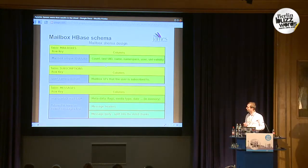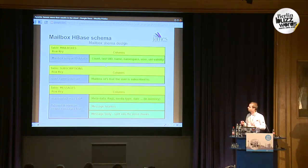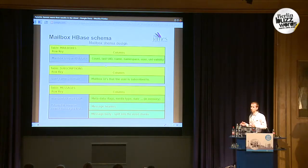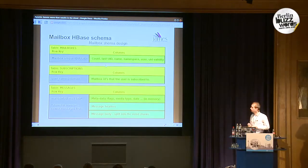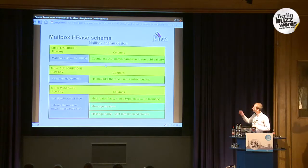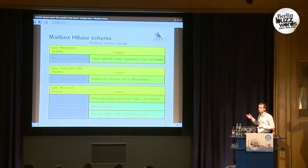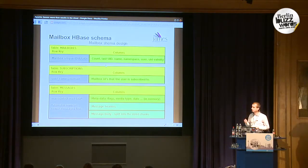The mailboxes table and the subscription table are all lightweight — they store metadata. The row key for the mailboxes is the mailbox ID, currently implemented as a Java UUID (128 bits), which is a random number providing pretty good distribution. This is important for distributing messages across the cluster. Columns are stored in one data column family. For each mailbox, we store the account, the last UID, the name of the mailbox, the namespace, the user who owns it, and some other metadata.